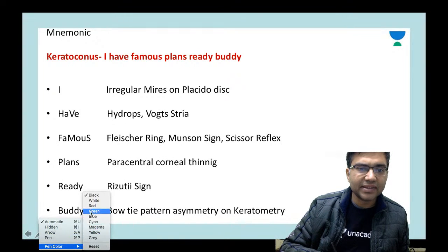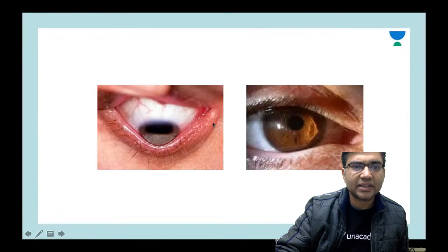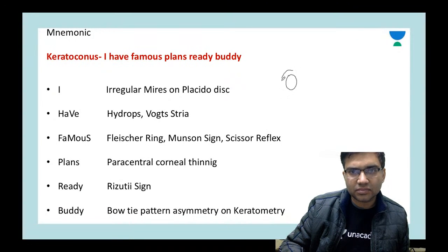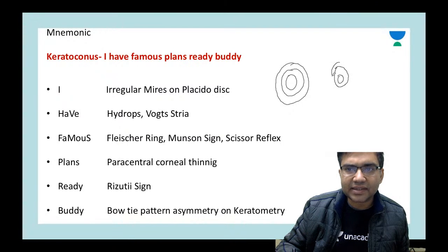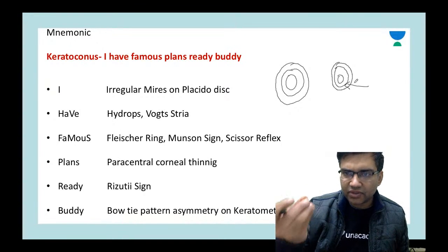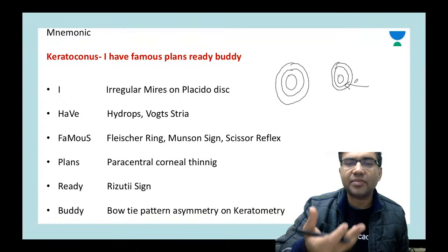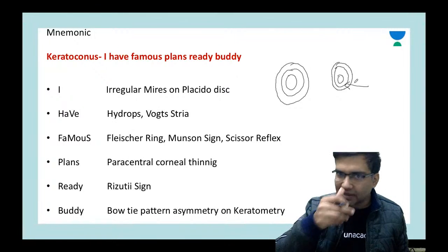'I' goes with irregular mires. On a Placido disc keratoscope, whenever you have keratoconus there may be crowding of mires in one quadrant or one pole — for example, crowding in the inferior pole means the inferior curvature is higher. This is called irregular mires, because there is irregular curvature of the cornea.